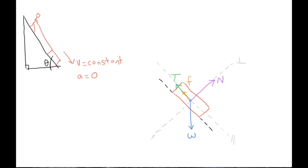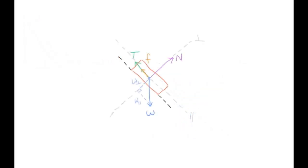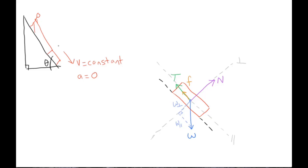I am going to break weight into components now. The parallel component will be along the slope — we'll call that W parallel. And we'll have a perpendicular component called W perpendicular. Because our sled has an acceleration of zero, all of the forces in both the parallel and perpendicular directions should cancel. This means W perpendicular is equal and opposite to the normal force, and the sum of the tension and friction forces should be equal and opposite to W parallel. Later we will use trigonometry to figure out what those values are.